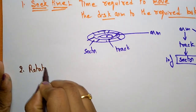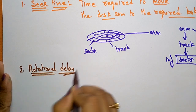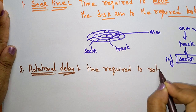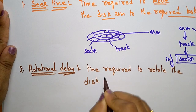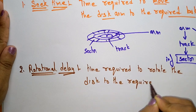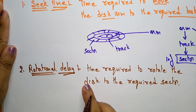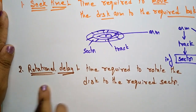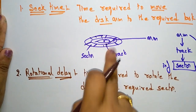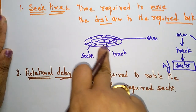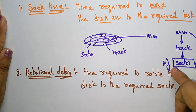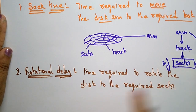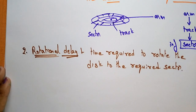The next important term is rotational delay — the time required to rotate the disk to the required sector. Here we are talking about rotating the disk to reach the required sector, whereas seek time refers to moving the arm to the required position. The time it takes to rotate the disk to where the data is present is called rotational delay.